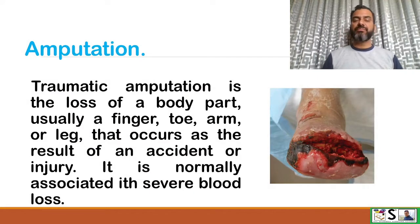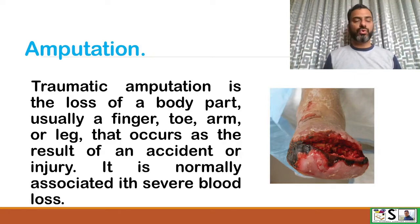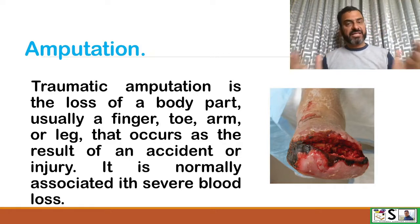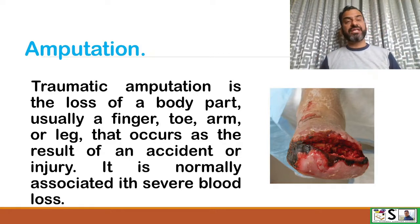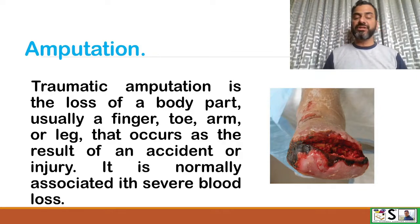Amputation: traumatic amputation is the loss of a body part — usually a finger, toes, arm, or leg — that occurs as a result of an accident or injury. It is normally associated with severe blood loss.